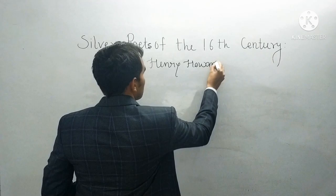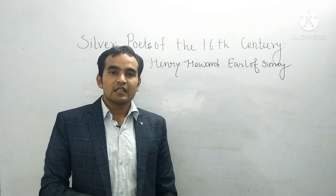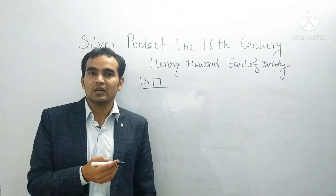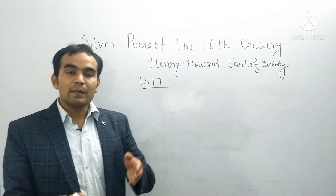The second silver poet of this era is Henry Howard, Earl of Surrey. Who was Henry Howard, Earl of Surrey? Henry Howard was from an aristocratic family.